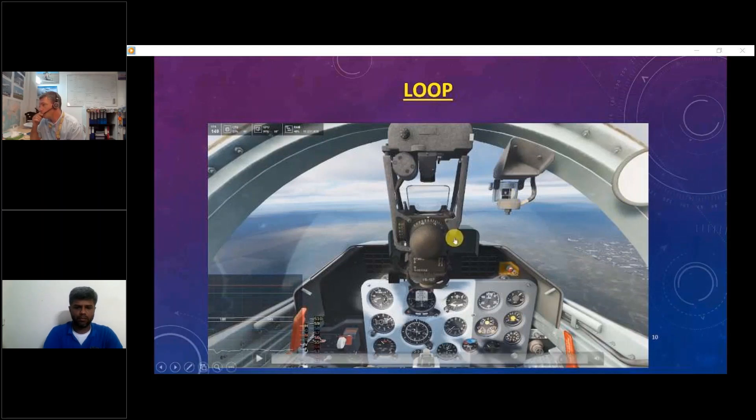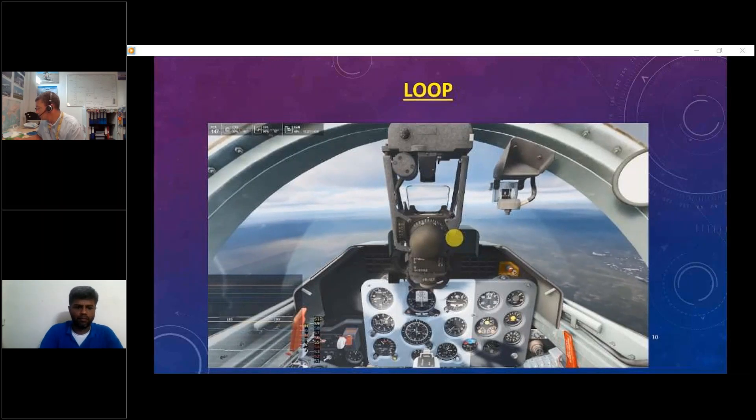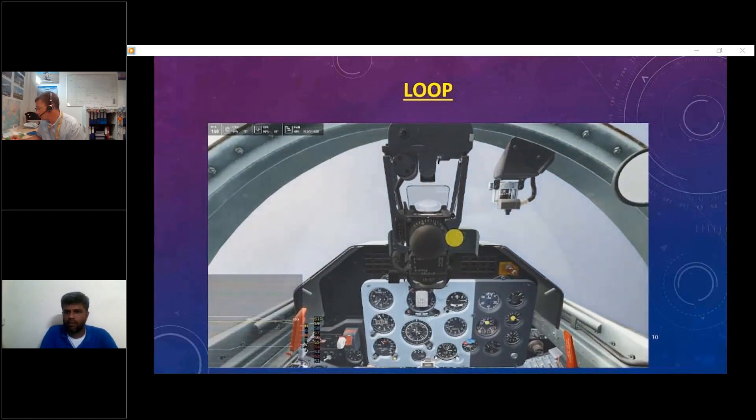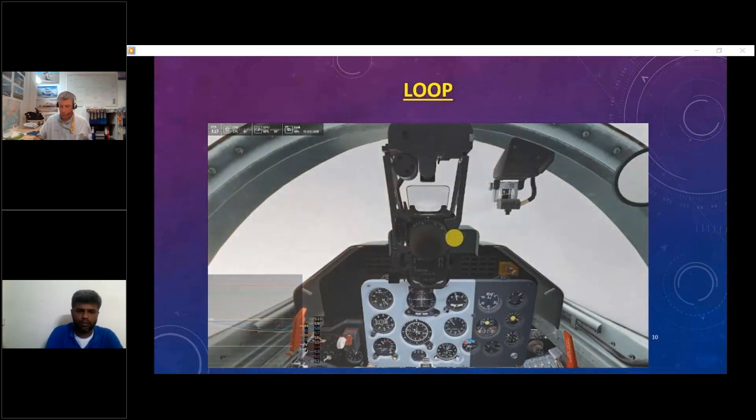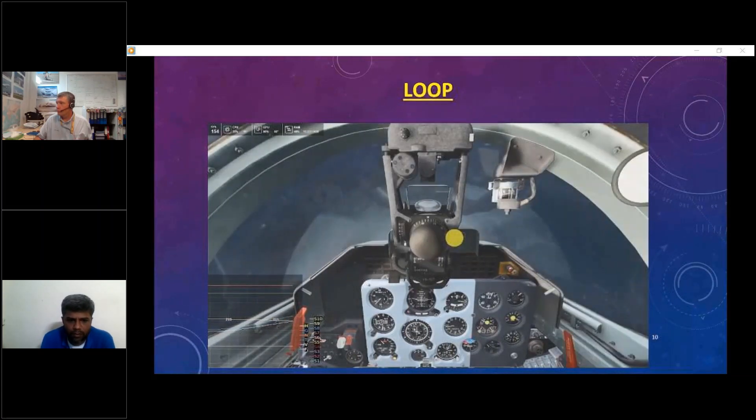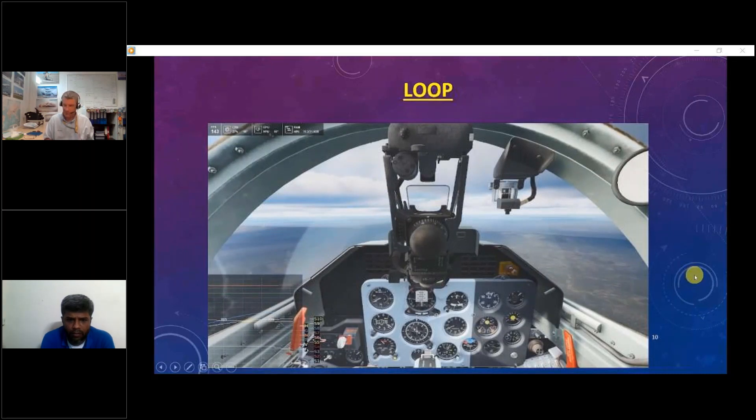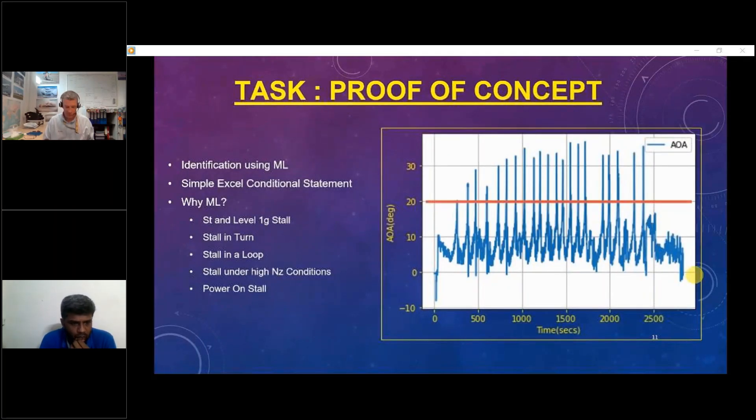To put things in perspective I will just play this video so that you can see how high fidelity data we can get and how representative the cockpit is to an actual aircraft. This is a loop maneuver which is being undertaken. The loop is being conducted at 4000 feet initiated at 300 knots, crossing second horizon at 8000 feet, nose down, recovering, recovered at 4000 feet.